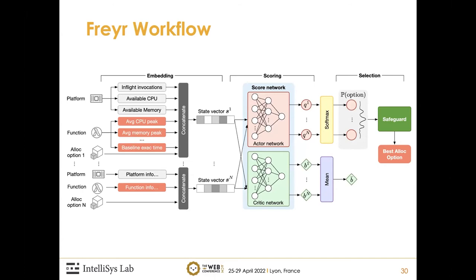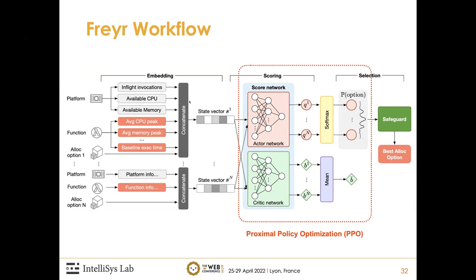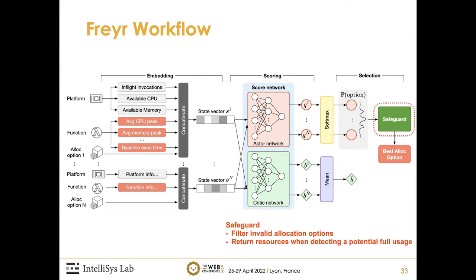Given an incoming invocation with its input size, we first collect information from the platform and the function. Platform information includes number of in-flight invocations, available CPU, available memory, and so on. Function information includes average CPU peak, average memory peak, and similar metrics. We concatenate this into a flattened state vector and input it to a DRL policy network, where we use proximal policy optimization (PPO) to train the DRL agent. We also have a safeguard to filter out invalid allocation options and monitor resource consumption in real time to return resources when detecting potential overuse.